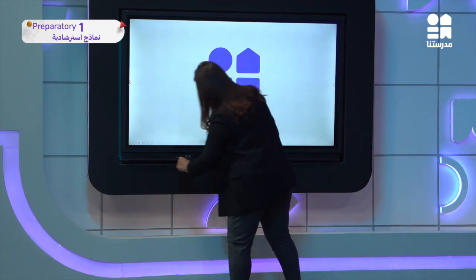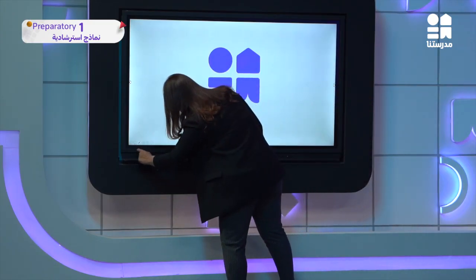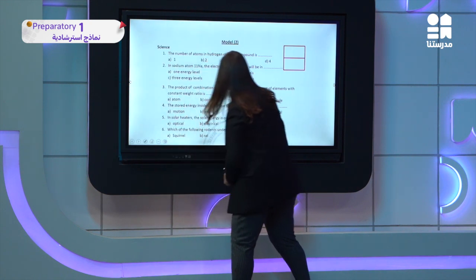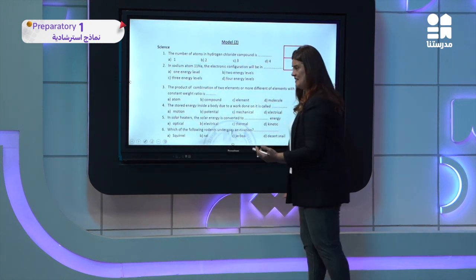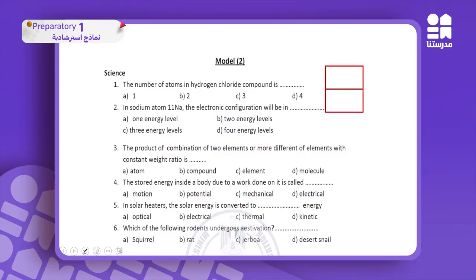Now I will talk about model exam 2. It is very easy and simple. The number of atoms in hydrogen chloride — HCl — I have one hydrogen and one chlorine, so the answer is 2 atoms.